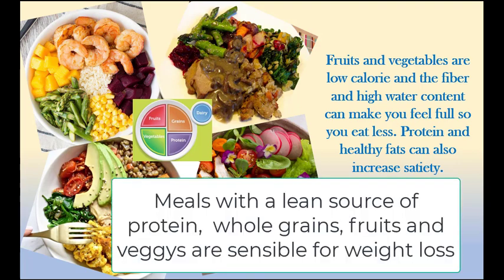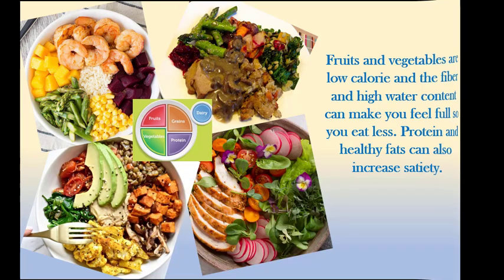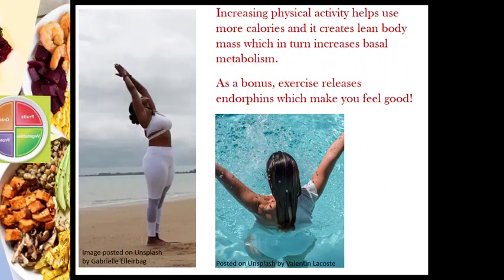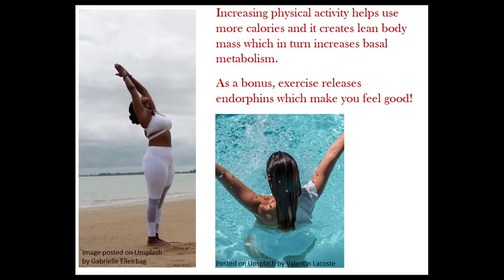Meals with a lean source of protein, whole grains, fruits and veggies are sensible for weight loss. On the opposite side of that balance is the energy used, and increasing your physical activity helps use more calories, but it also creates lean body mass, which in turn increases your basal metabolism. That's a win-win situation.